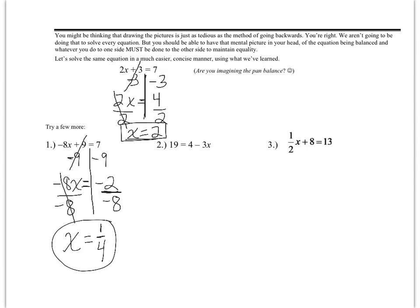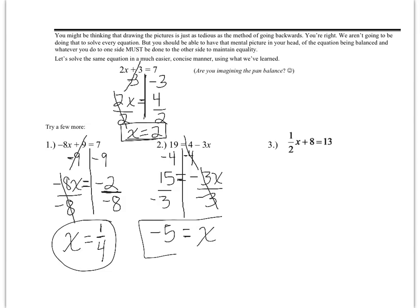Now let's take a look at number 2. The x is on the other side of the equal sign — not a big deal, you're just canceling things out on the right hand side. I'm going to draw a line where my equal sign is. I've got to get rid of the 4 — the negative sign belongs to the 3 — so to get rid of the 4 you subtract 4 from both sides. 4 − 4 = 0, so that cancels out. 19 − 4 = 15, so you get 15 = −3x.